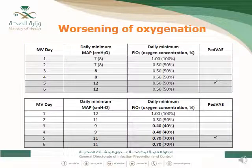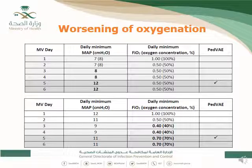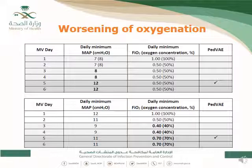Here is an example of meeting worsening oxygenation using MAP and FiO2. For MAP: the patient is under 30 days, so values of 7 are considered 8. Days 1 through 4 show a MAP of 8, then days 5 and 6 show 12 — an increase of 4 cm, meeting the Pediatric VAE definition. Day 5 is the date of event. For FiO2: it was 40 on days 3 and 4, then 70 on days 5 and 6 — an increase of more than 25%, meeting the definition with day 5 as the date of event.